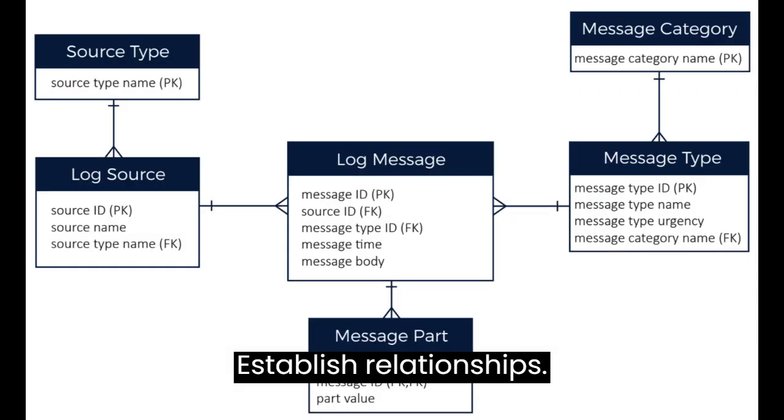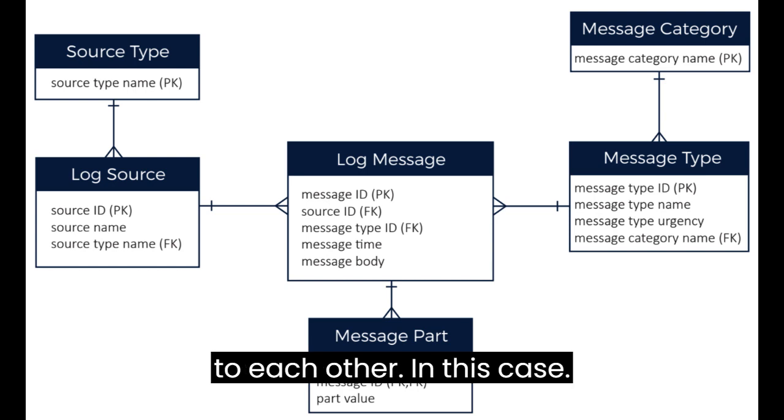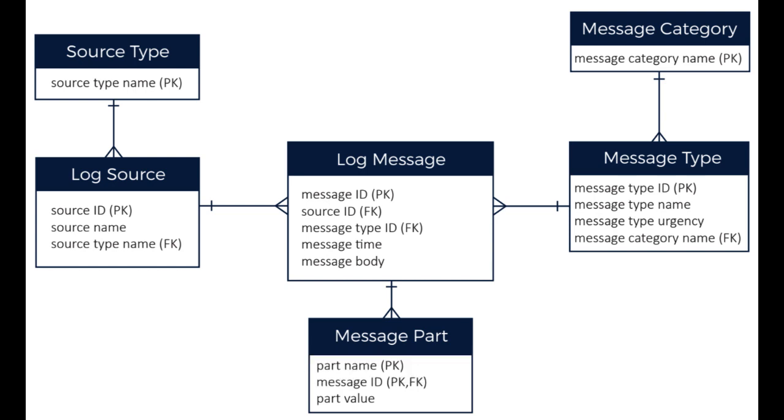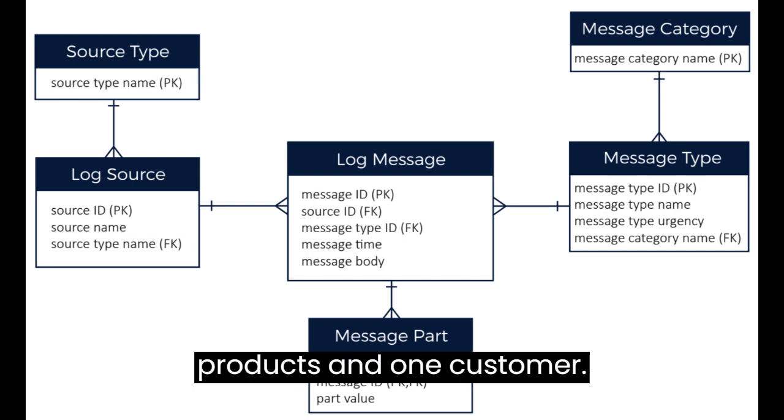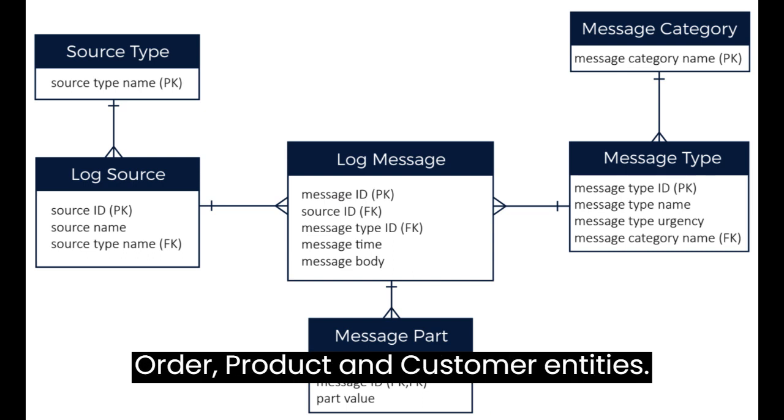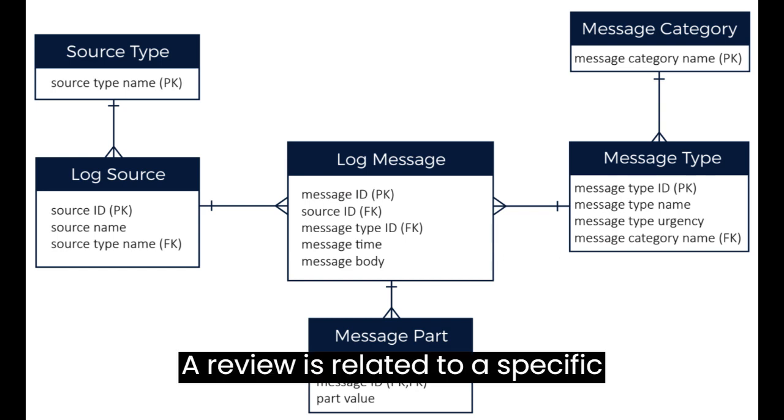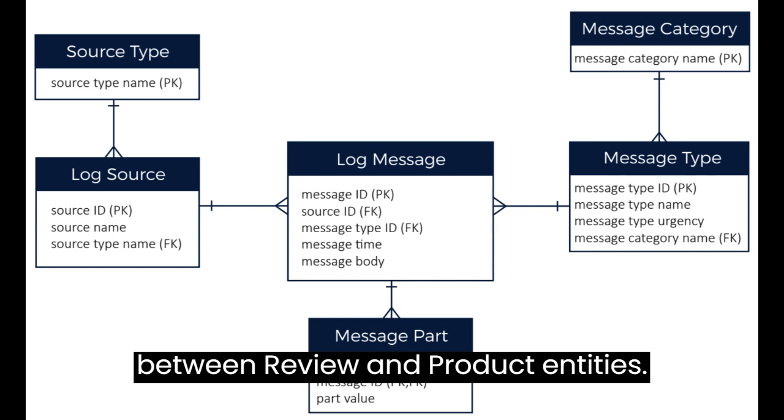Establish relationships. Determine how these entities are related to each other. In this case, an order is associated with one or more products and one customer, so you establish a relationship between order, product, and customer entities. A review is related to a specific product, so you establish a relationship between review and product entities.